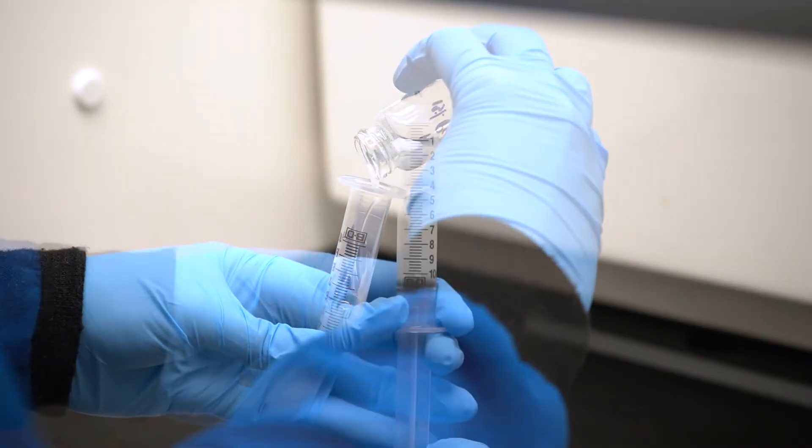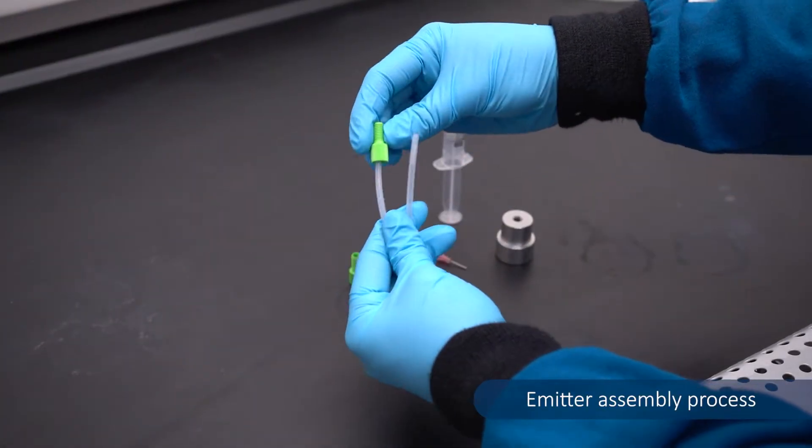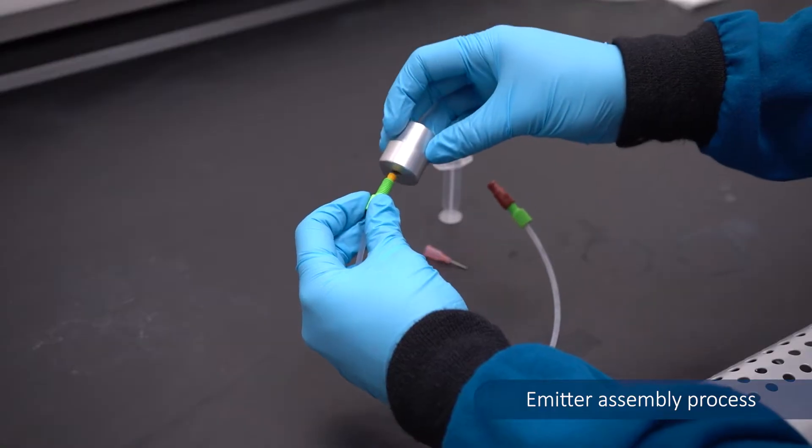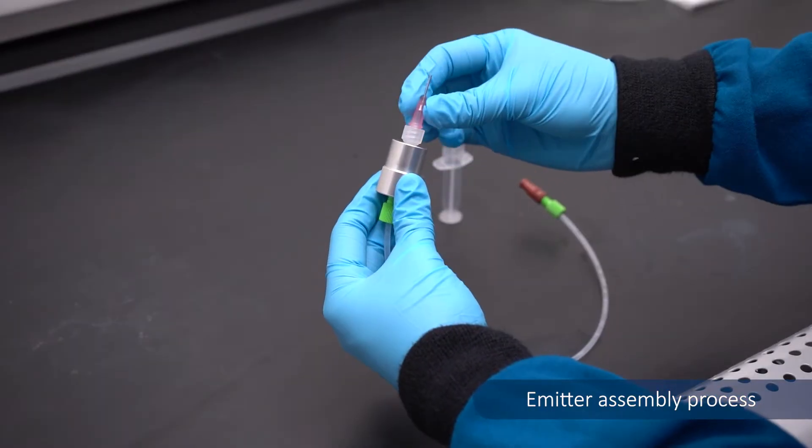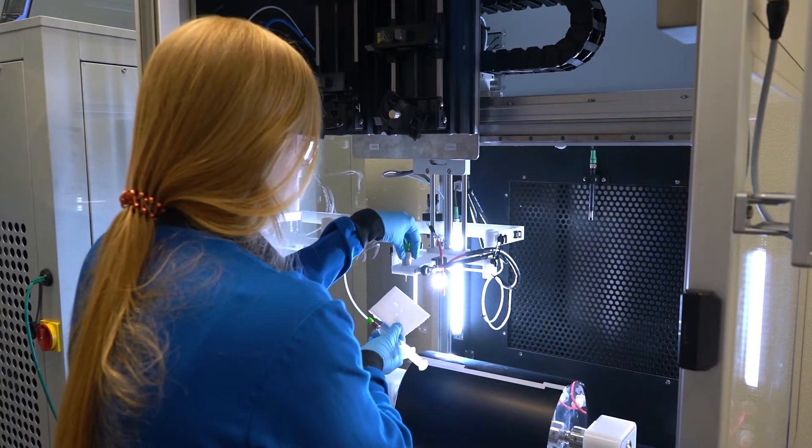Next, load your solution into a syringe that is then connected to a special nozzle or emitter using a tubing assembly. This emitter, typically a capillary needle, helps to create a tiny electrified jet of your polymer solution. It's like the magic wand of electrospinning.